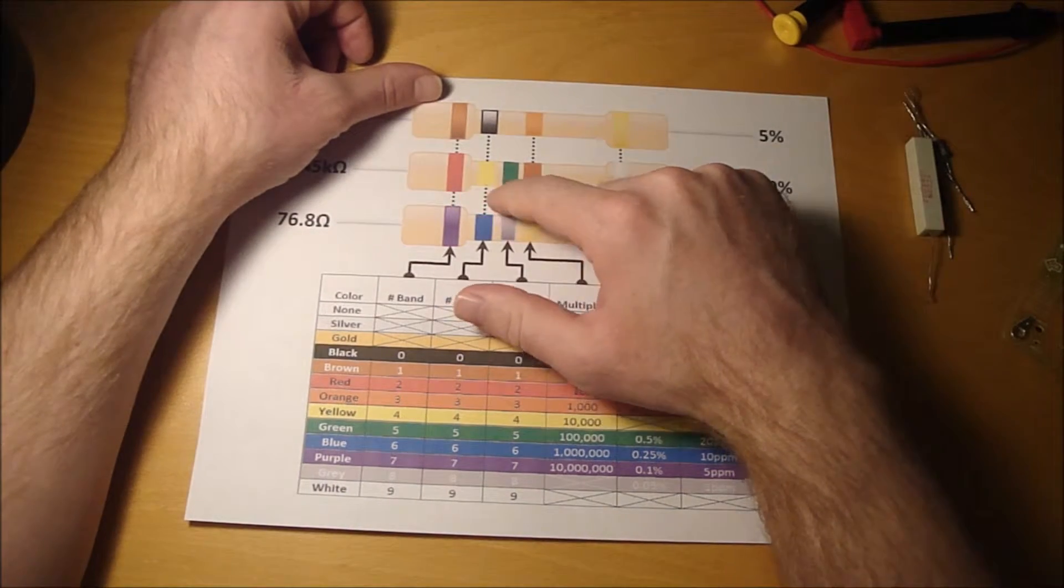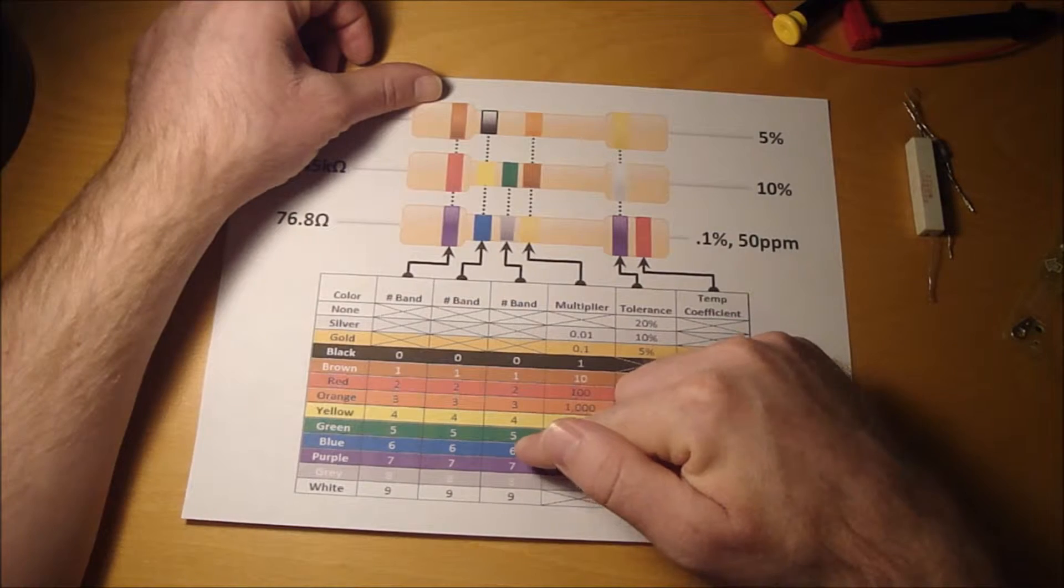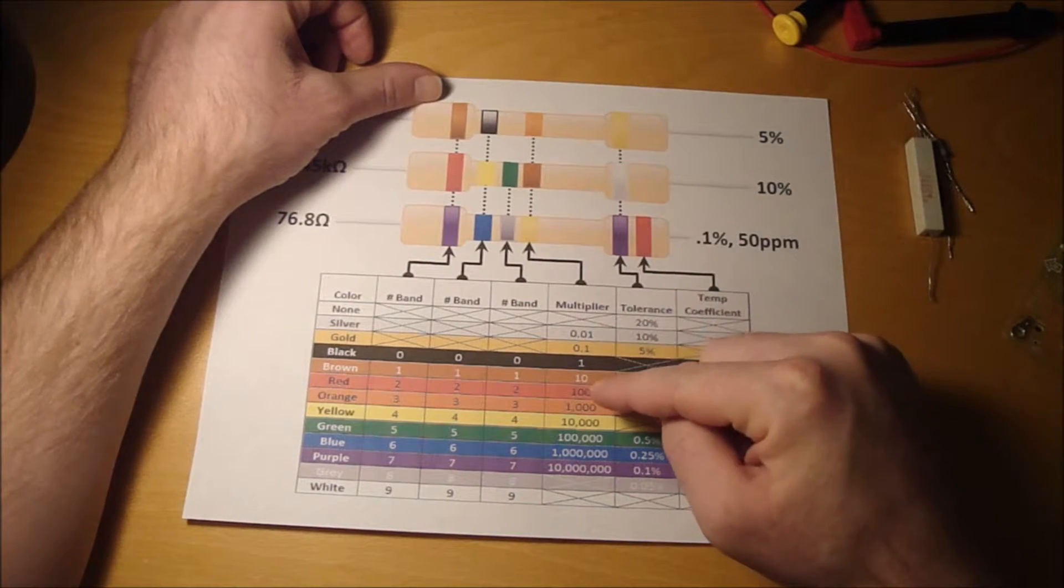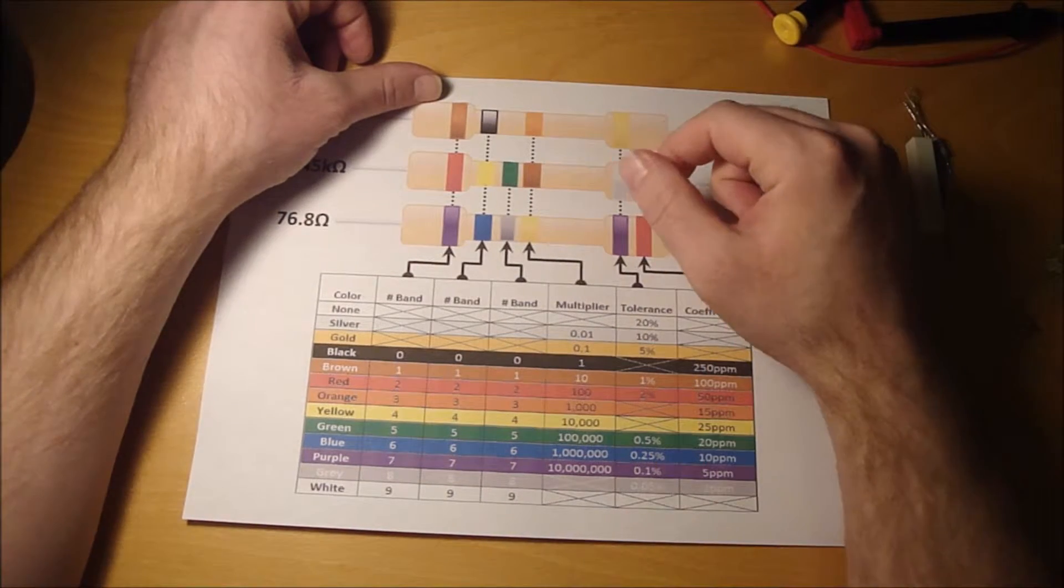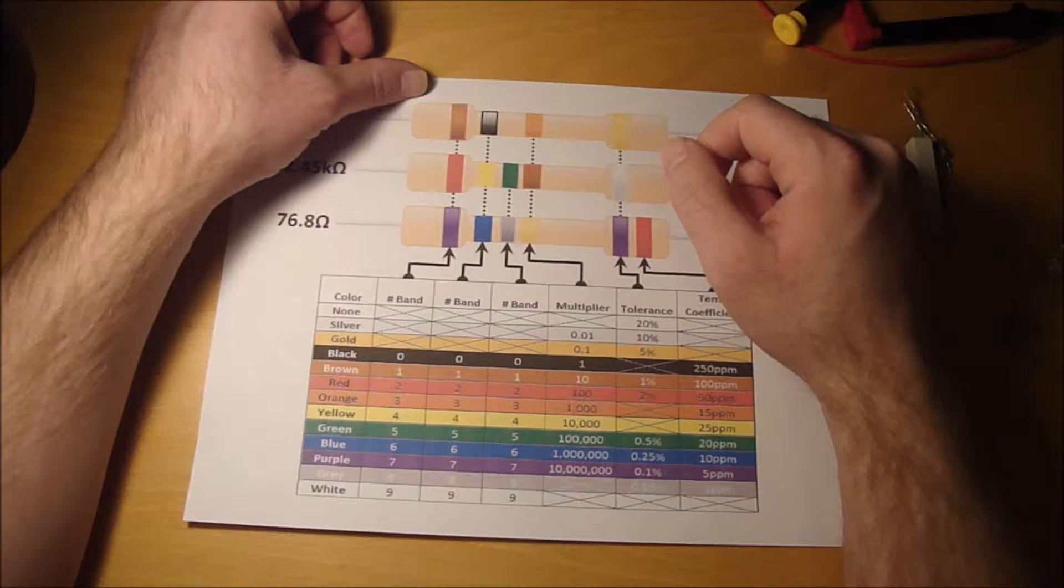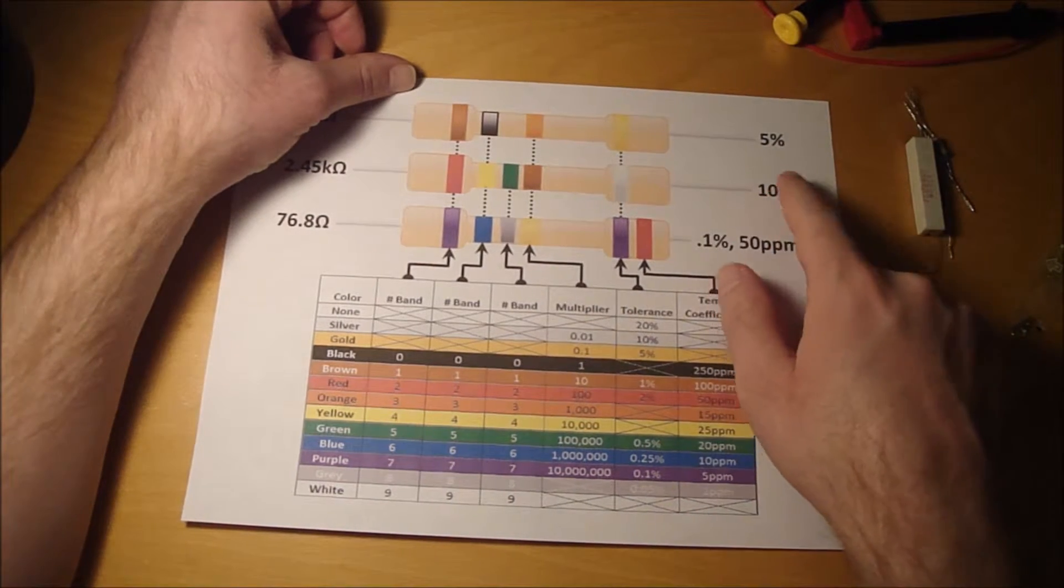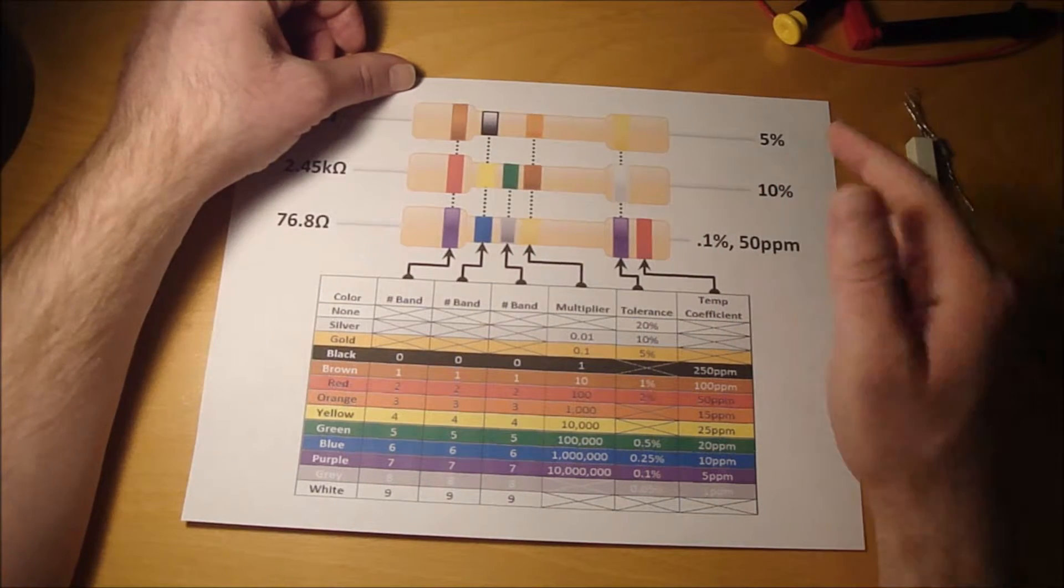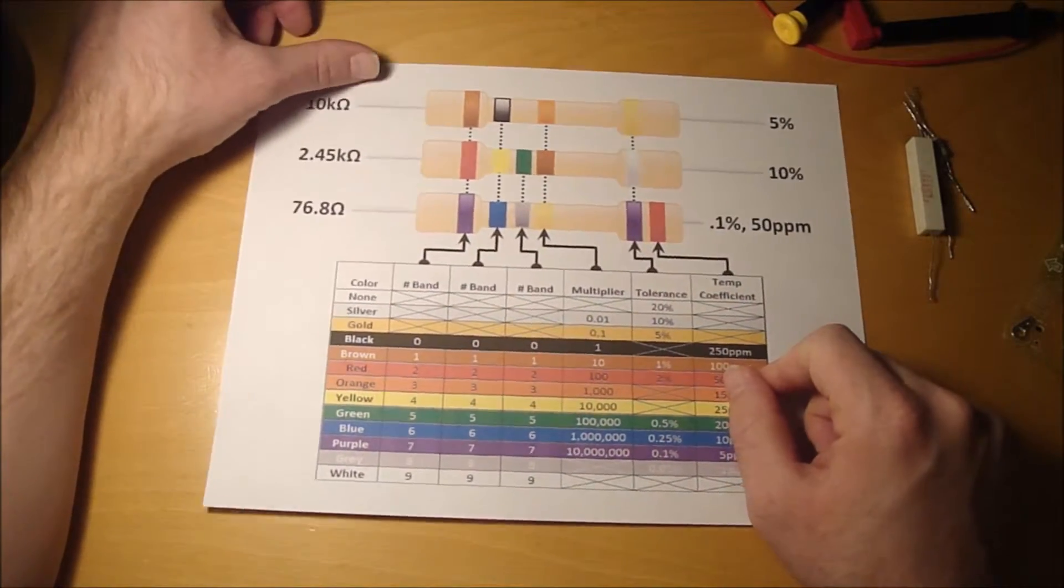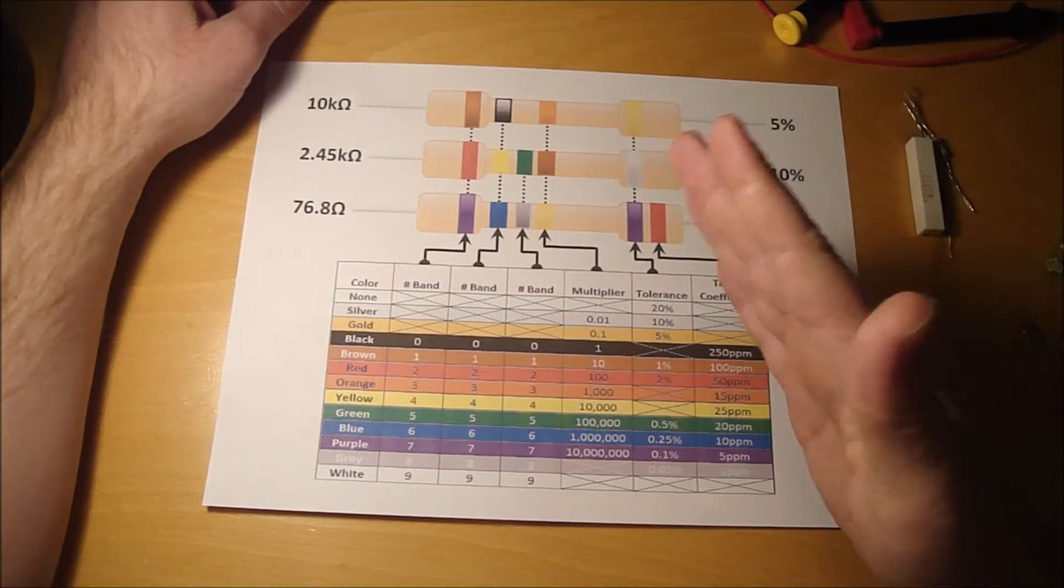So this one is red, yellow, green for your number bands. Red is two, yellow is four, green is five. So it's 245 times brown, which is 10. So 2,450 ohms, or 2.45K. And the silver is a 10% tolerance. So the tolerance is plus or minus 10% is what your resistance can vary.